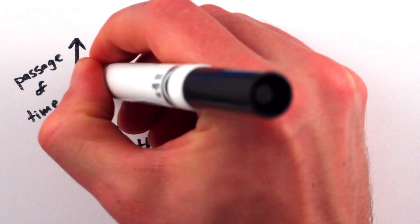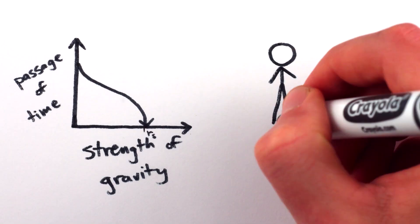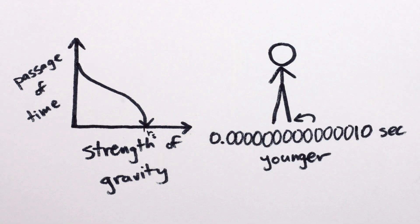That's right, more gravity makes time slow down too. If you stand up for a minute, your feet will age 10 femtoseconds less than your head.